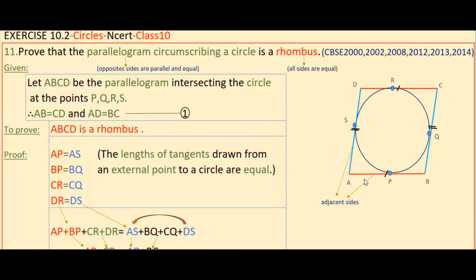We know that if adjacent sides of a parallelogram are equal, then it is called a rhombus. So if we prove one pair of adjacent sides is equal, we can say it is a rhombus. Adjacent sides — you can take any pair, such as AB and AD, or AB and BC, or CD and any adjacent side.